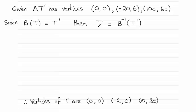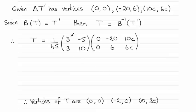So all we need to do is use the inverse of B, which we found in the previous question, and multiply it by the matrix representing the vertices of T prime. The inverse of B was (1/45) times the matrix [3, -5; 3, 10]. It's just a question of multiplying this out, and we should arrive at the answer. When multiplying, I'll handle the two matrices first and then apply the factor of 1/45 at the end.